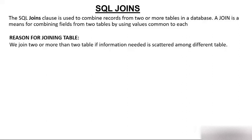The reason for joining a table: we join two or more tables when the information needed is scattered among different tables. If the information is coming from the combination of more than one table, we need to join those tables — only then will we be able to find the information.